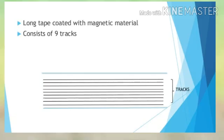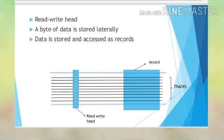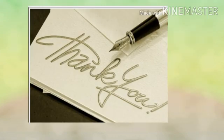A long tape coated with magnetic material consists of 9 tracks. In a magnetic tape, the parts are the read-write head; a byte of data is stored laterally, and data is stored and accessed as records. Thank you.